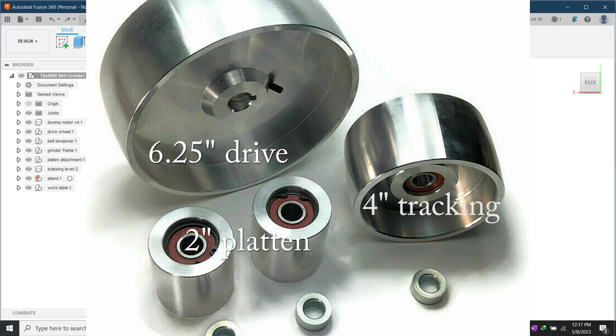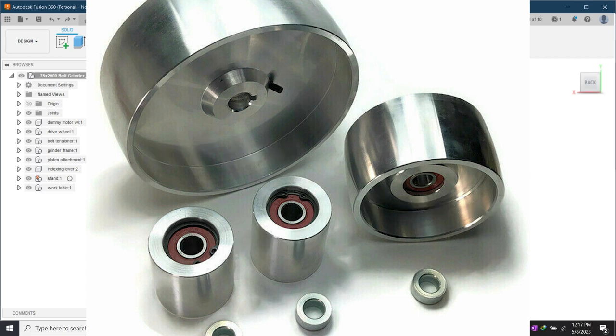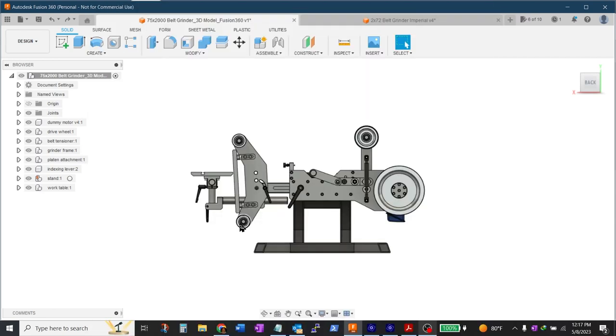I chose the smaller drive wheel because I'll be using a smaller belt and will help keep things a little more compact. It'll of course reduce the surface speed of the belt as it whips around but I can adjust my VFD and motor speed to accommodate.